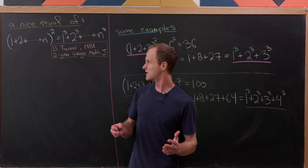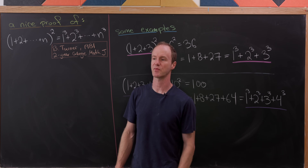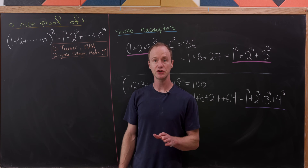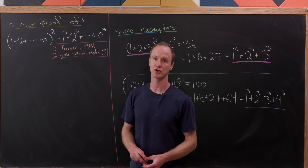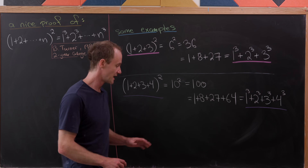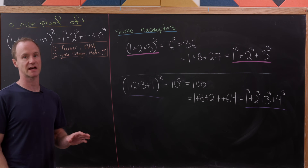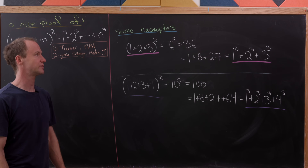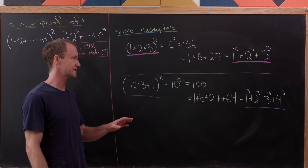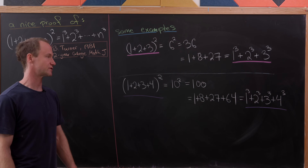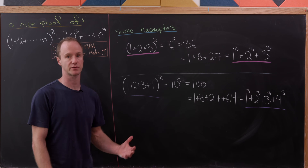This identity is really nice because it's easy to write down and it looks really surprising. I found this proof in a two-year college math journal article by Barbara Turner. Let's look at a small example: one plus two plus three, squared, is six squared, which is 36, and that also equals one plus eight plus 27, or one cubed plus two cubed plus three cubed.